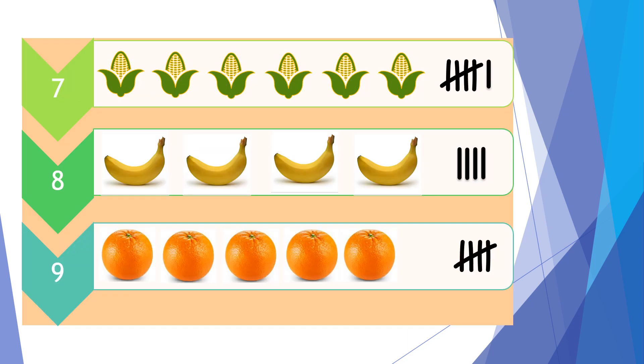Yeah, you should have 6 sweetcorns, 4 bananas, and 5 oranges.